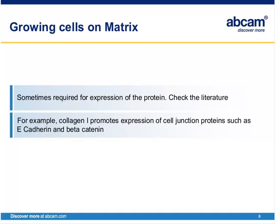Going back to our slide on growing cells on matrix: you may need to grow your cells on a matrix, for example on collagen 1, to induce the expression of the protein you're looking for in the correct localization. We suggest checking the literature to confirm whether or not this is required.